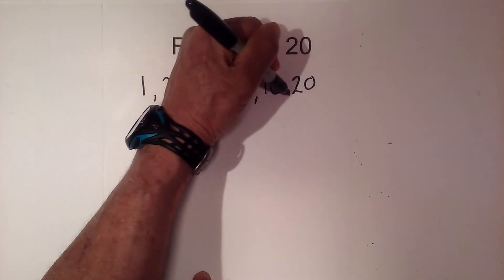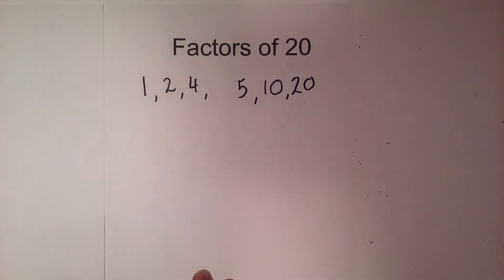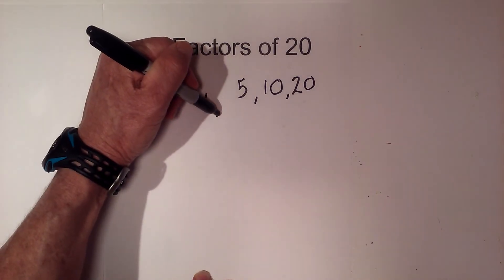The factors are 1, 2, 4, 5, 10, and 20. Let's also find the prime factors of 20, and I like to use a factor tree.